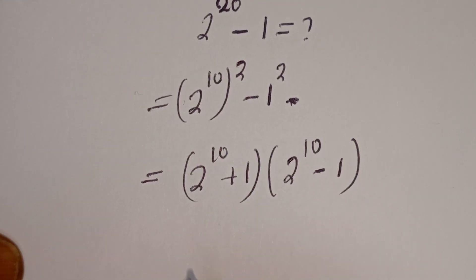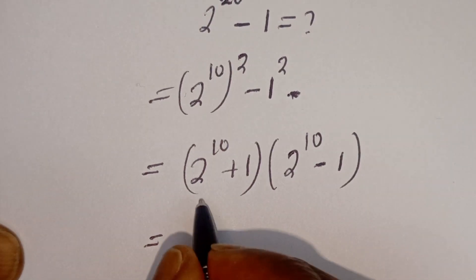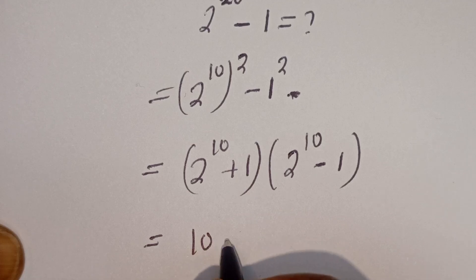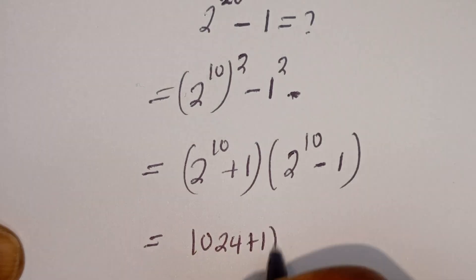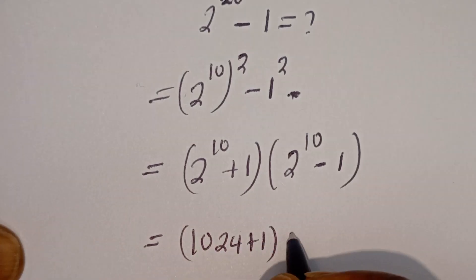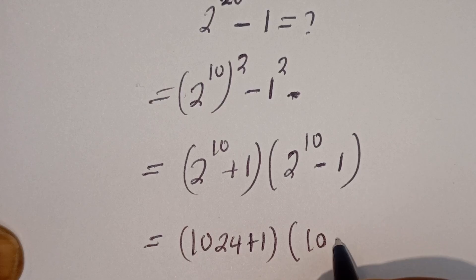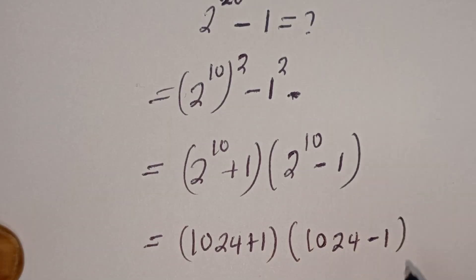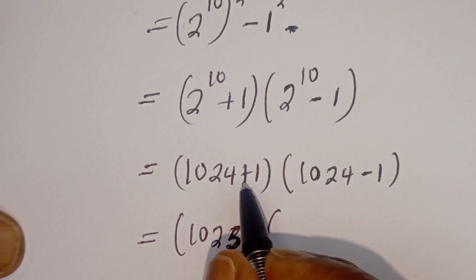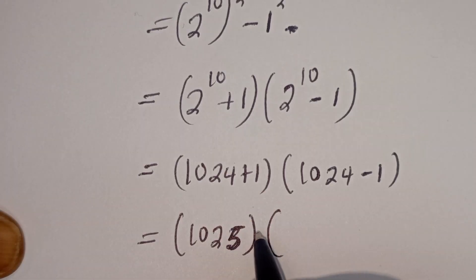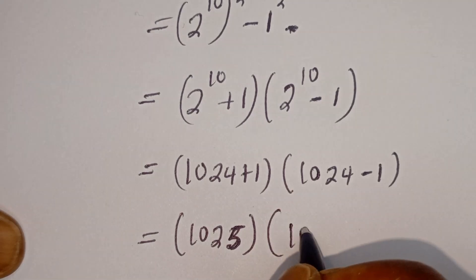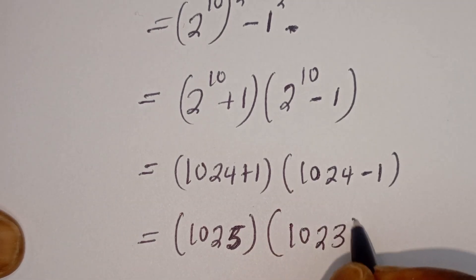Then here we have 2 to the power of 10, which is 1024. Plus 1 gives us 1025. Bracket: 1024 minus 1 gives us 1023.